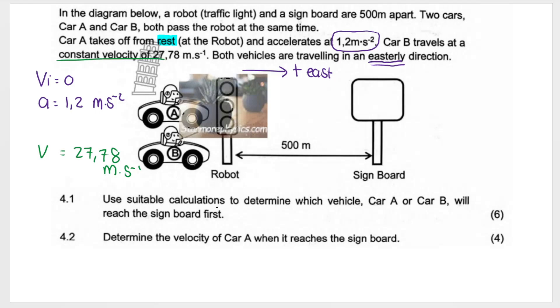Then it says, use suitable calculations to determine which vehicle will reach the signboard first. Essentially, what we need to do is work out how long it's going to take for Car A to reach the signboard, and how long it's going to take for Car B. Remember, both cars are 500 meters away.